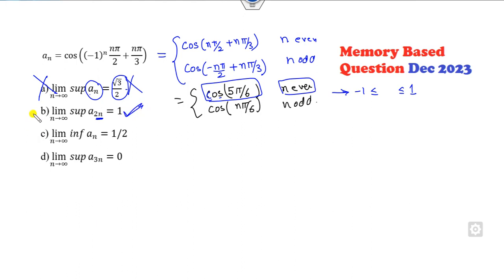But it is aₙ - it is not true. Limit supremum of aₙ when a₂ₙ - 2n means n is even, so the supremum of this limit is always 1. Infimum of aₙ - aₙ is complete even and odd, so the minimum is -1. The right answer will be only B.